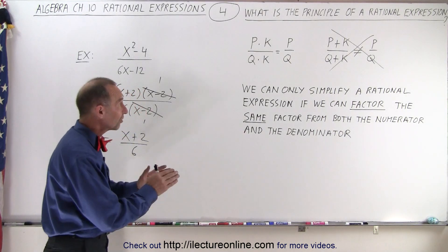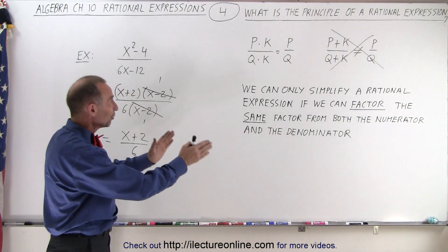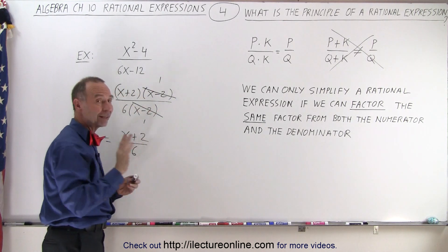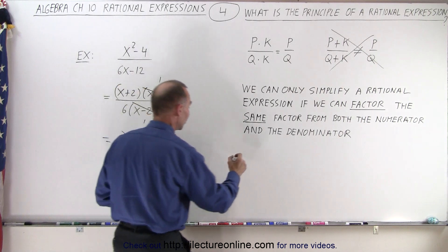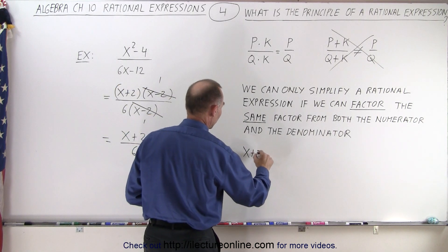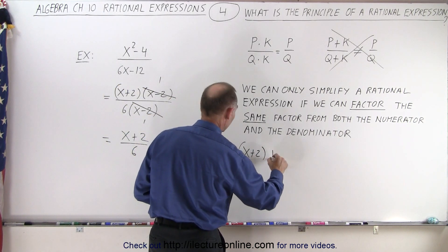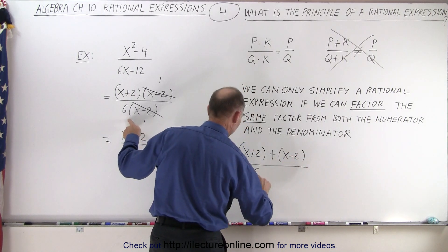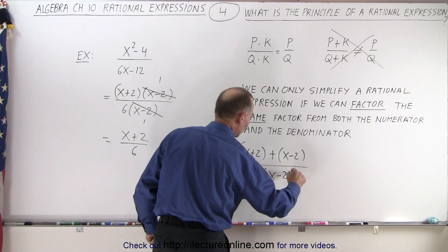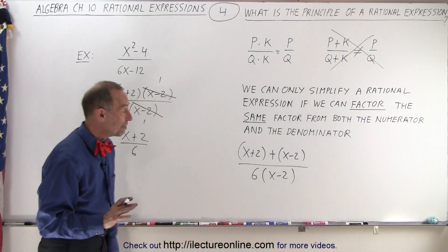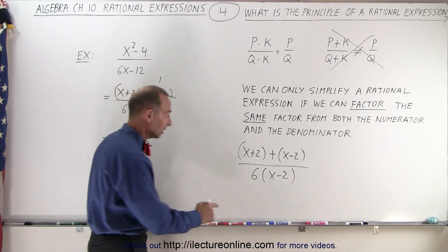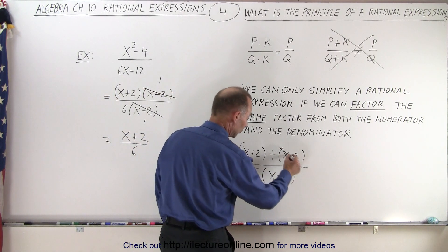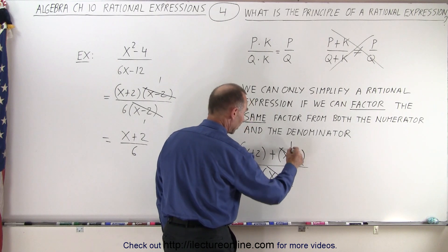Now, to show you an example where you can see the difference between what we can and cannot do, let's write this differently. Let's say we ended up with (x plus 2) plus (x minus 2) divided by 6 times (x minus 2). Here you may be very tempted. You say, okay, I see an x minus 2 here and an x minus 2 there. Can I simplify by dividing the numerator and denominator by x minus 2?